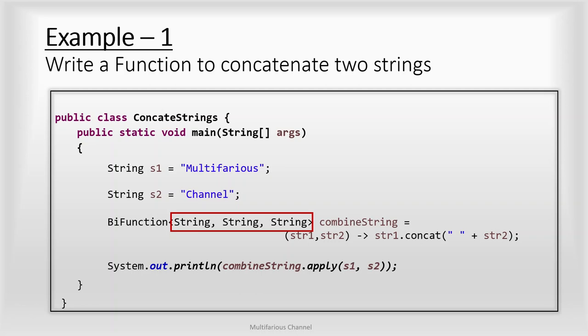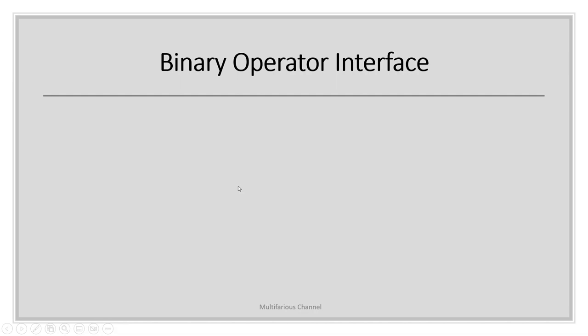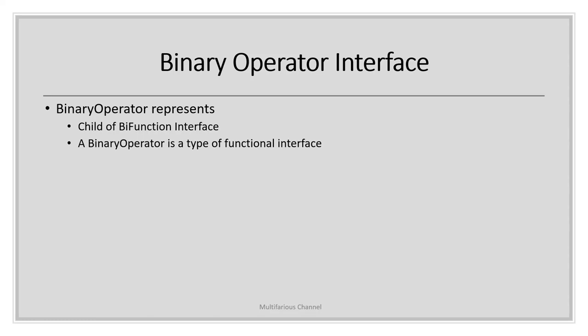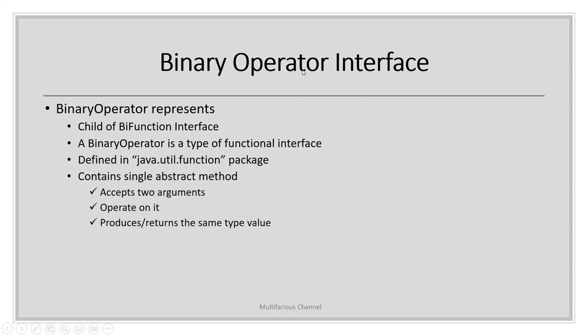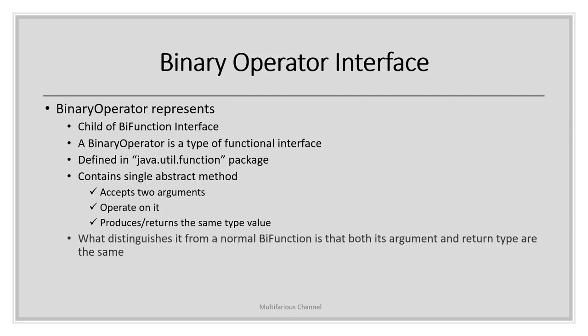So what is BinaryOperator? A BinaryOperator is the child interface of the BiFunction interface. It is also part of the java.util.function package and is a functional interface. The BinaryOperator functional interface is a specialized type of BiFunction that operates on two operands of the same type and returns a result of the same type. It defines a single abstract method named apply which takes two operands and returns a result. What distinguishes it from a normal BiFunction is that both its argument types and return type are the same.